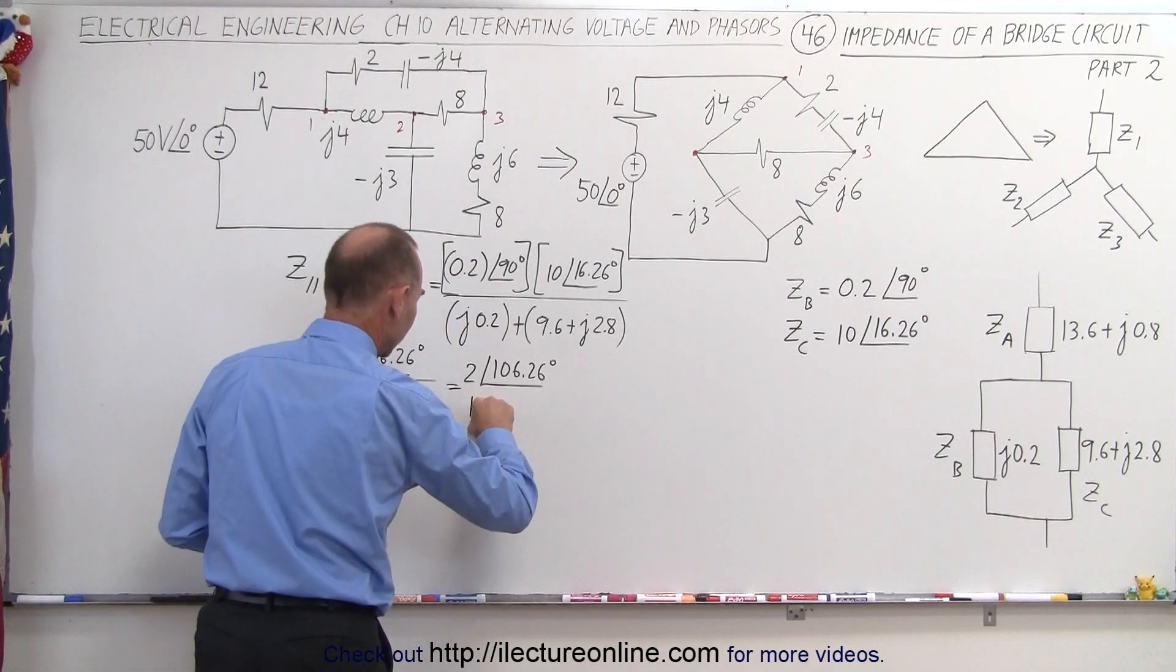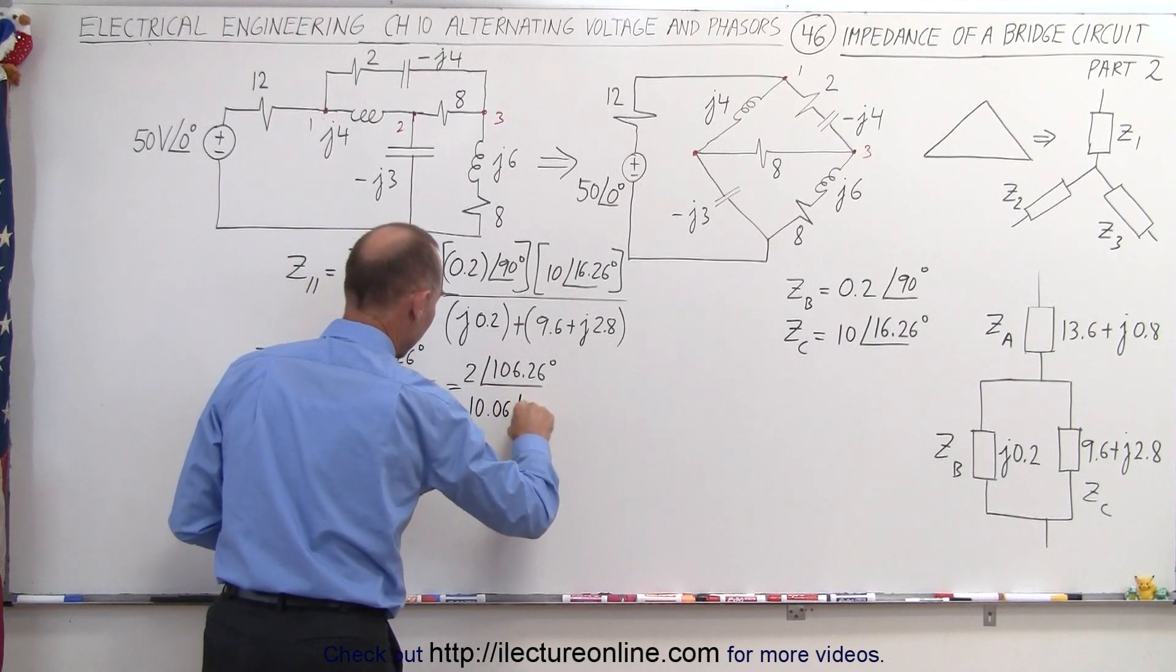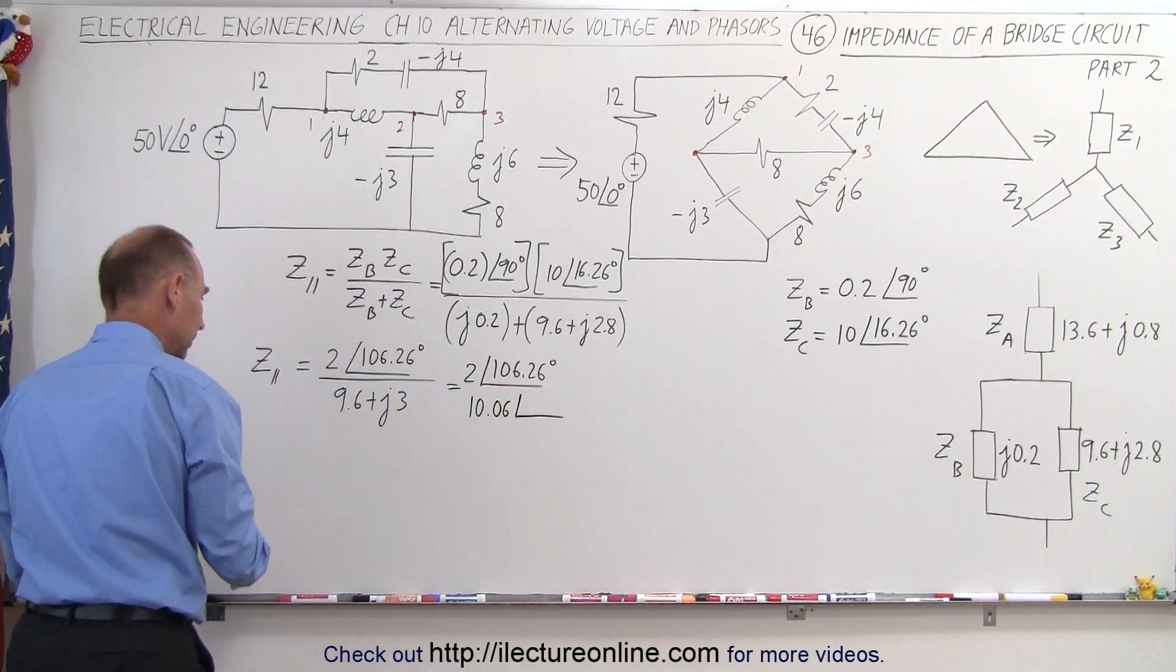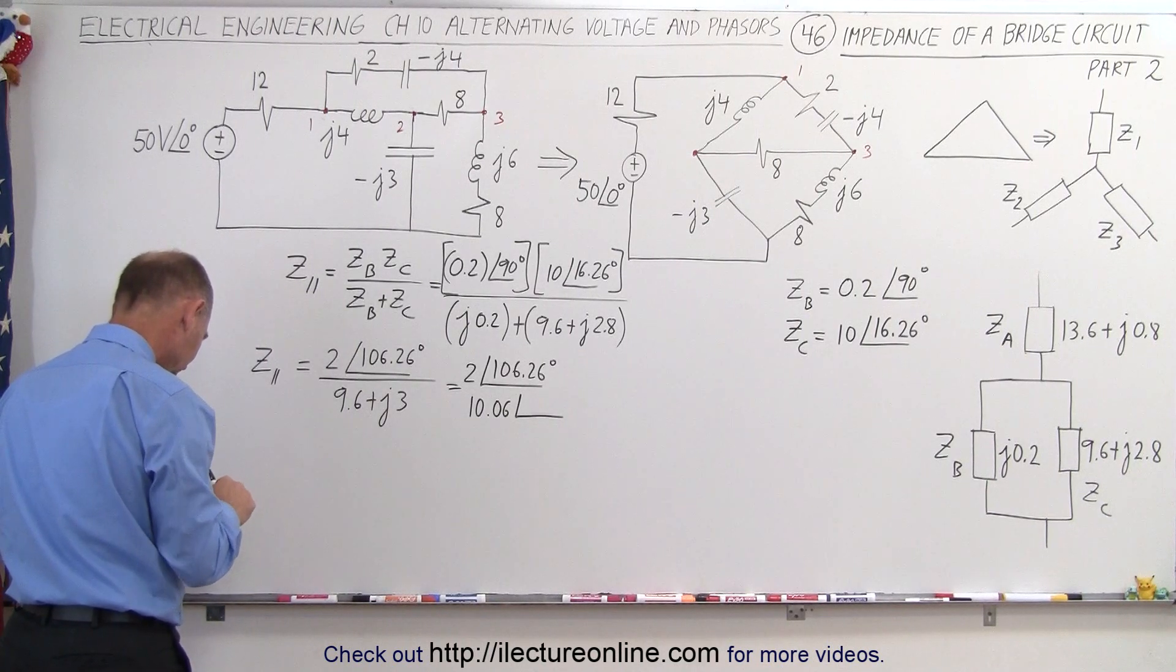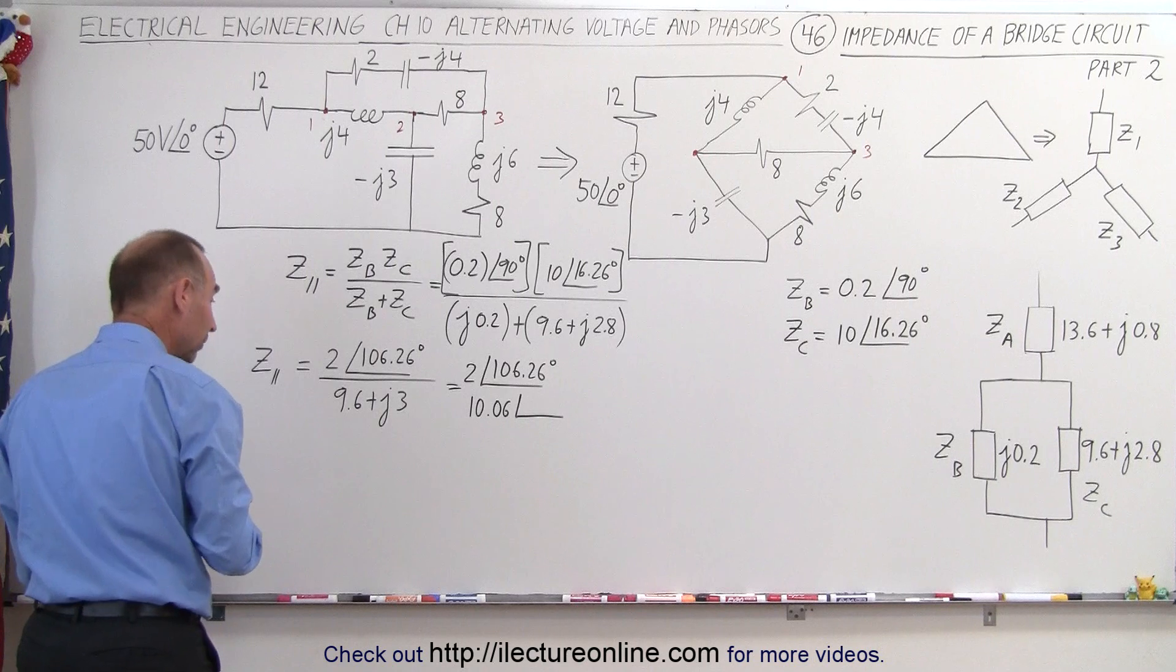For magnitude, 10.06, and a phase angle, we take 3 divide by 9.6 and take the inverse tangent, that gives us 17.35 degrees.